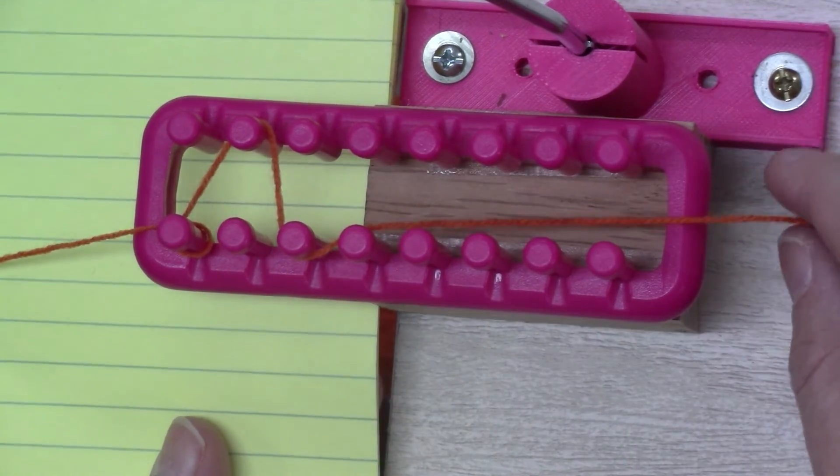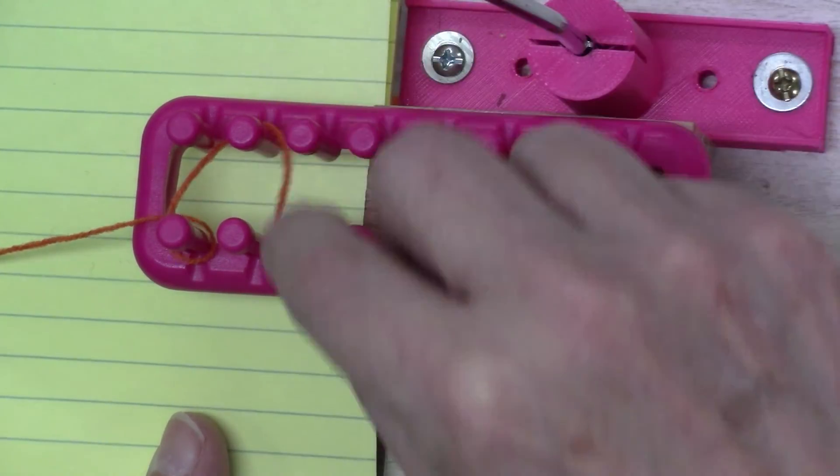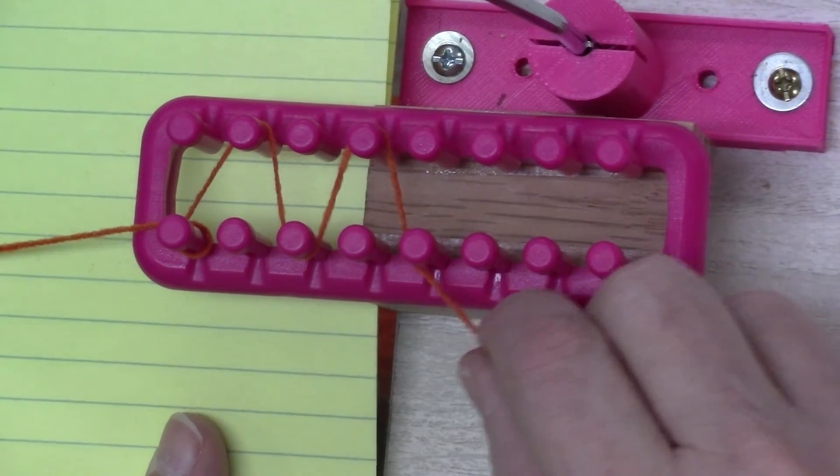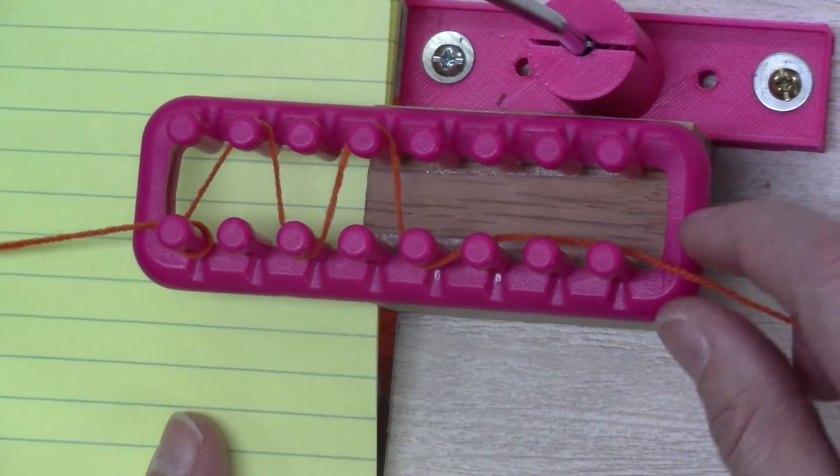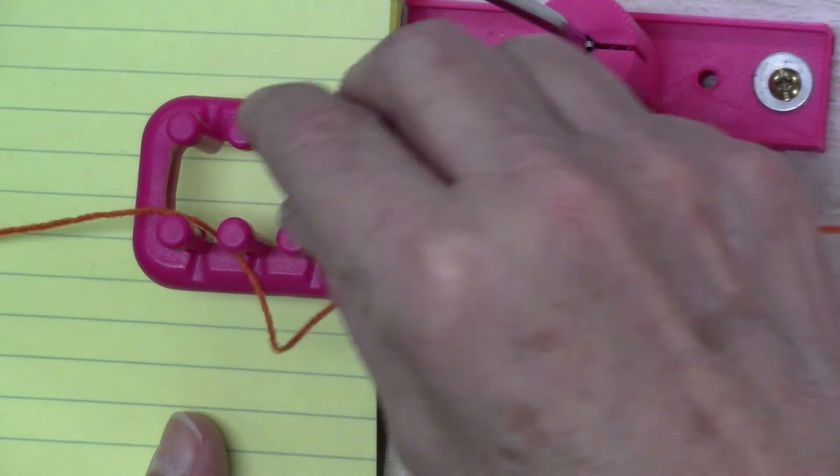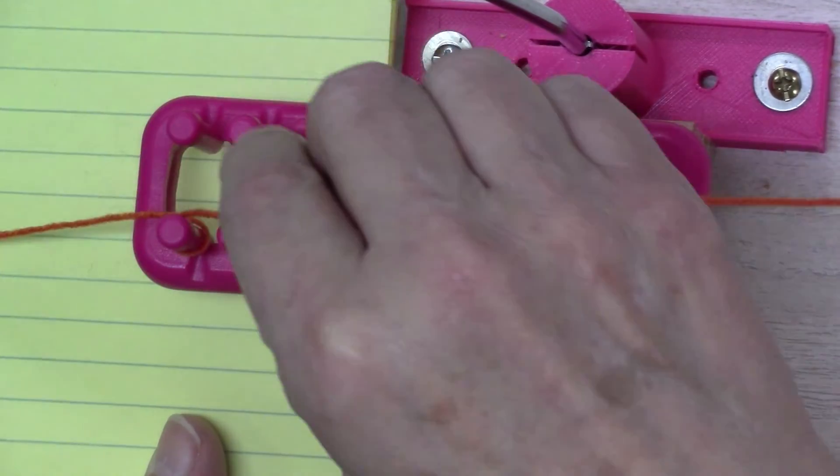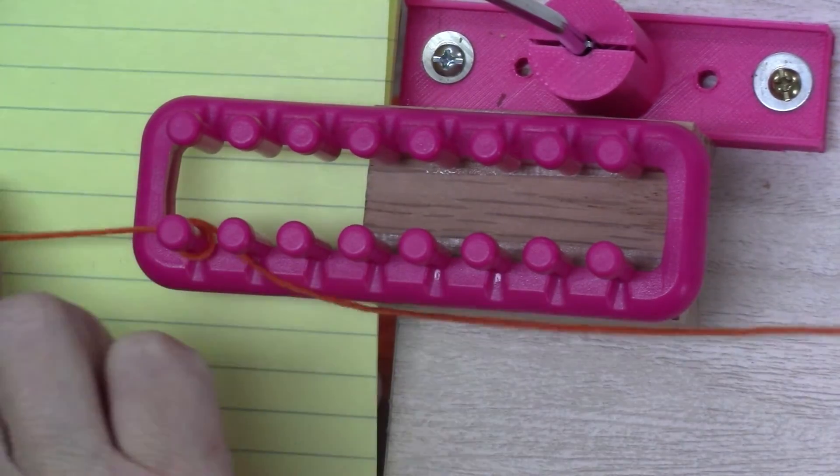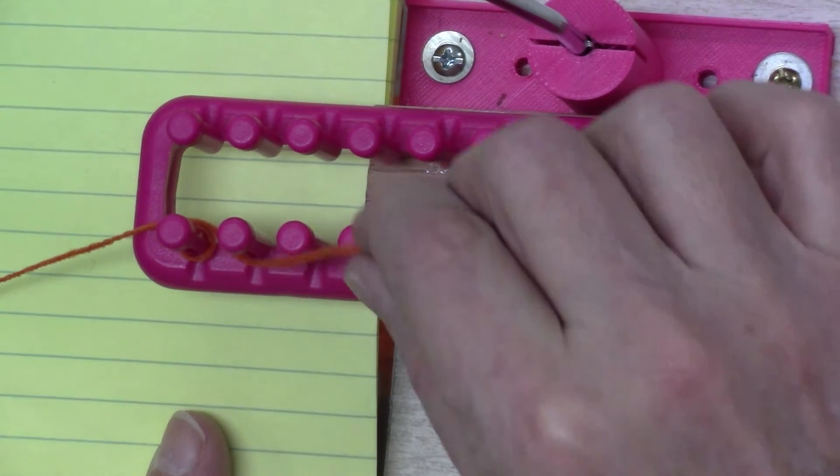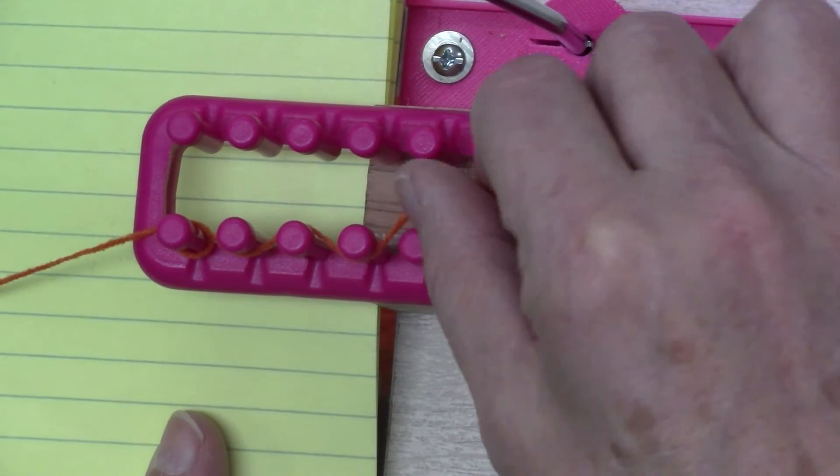Then you can add another peg, and another, and just keep going back and forth until you get the tension you want. You can actually try for, and I've done this, you can get even more minute changes by going in and out in a straight line, and then going across.